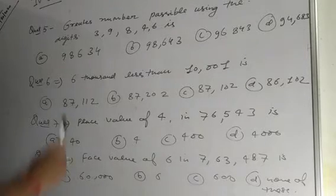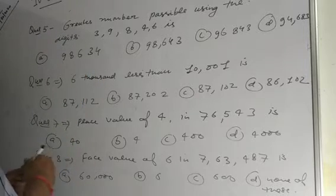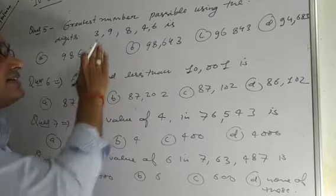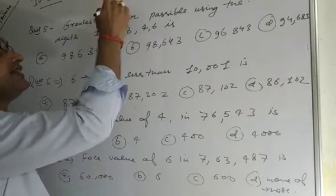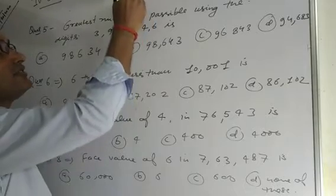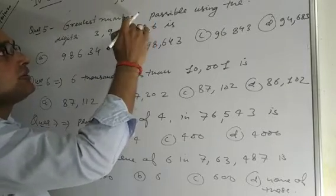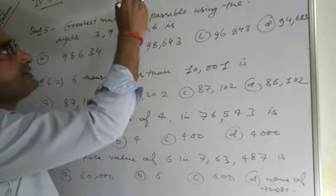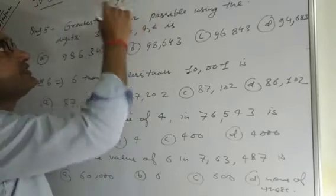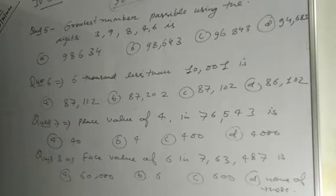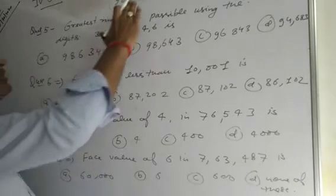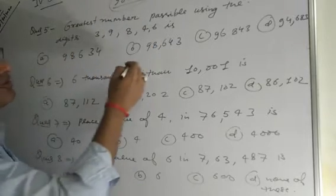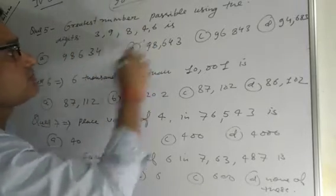Question number 5. Find the greatest number possible using the digits 3, 9, 8, 4, 6. When we write the greatest number, we arrange digits from largest to smallest: 9, 8, 6, 4, 3. So the greatest possible number is 98,643. Therefore, option B is the correct answer.